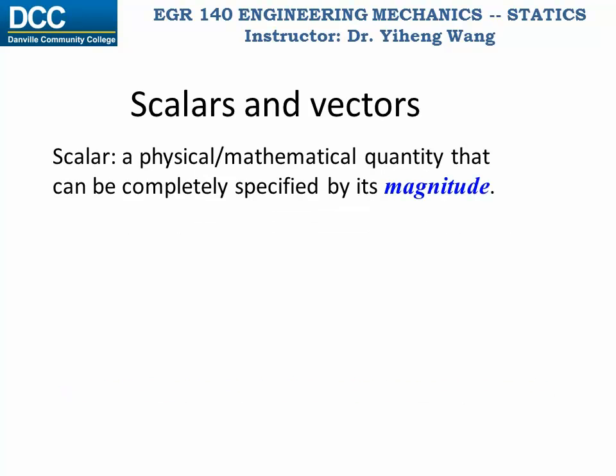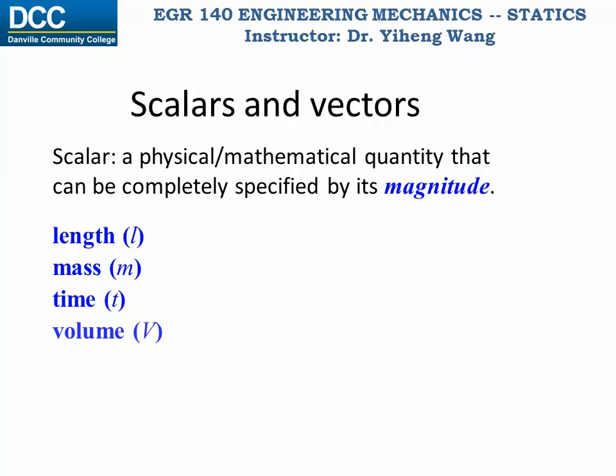You are probably more familiar with scalars. Scalars and vectors are both physical and mathematical quantities. A scalar can be completely specified by its magnitude, in other words, how big it is. Common physical quantities that are scalars include length, mass, time, and derived quantities such as volume and energy.